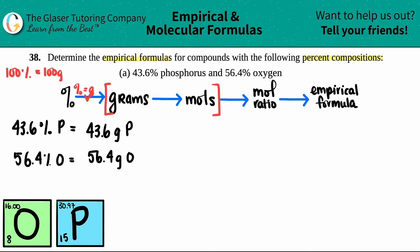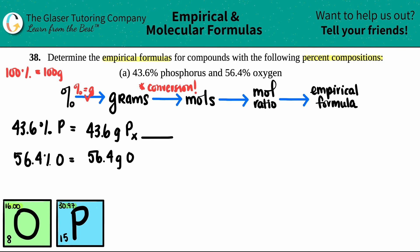Now we go from grams to moles — this is just a conversion using numbers from the periodic table. The mass values, like 16 for oxygen and 30.97 for phosphorus, may vary slightly by periodic table. For phosphorus: the unit you don't want — grams — goes on the bottom of the conversion factor, and moles go on the top. The same applies for oxygen: grams of oxygen on the bottom, moles of oxygen on top.